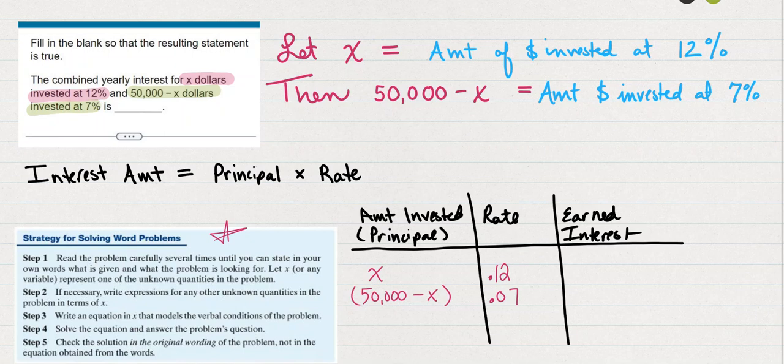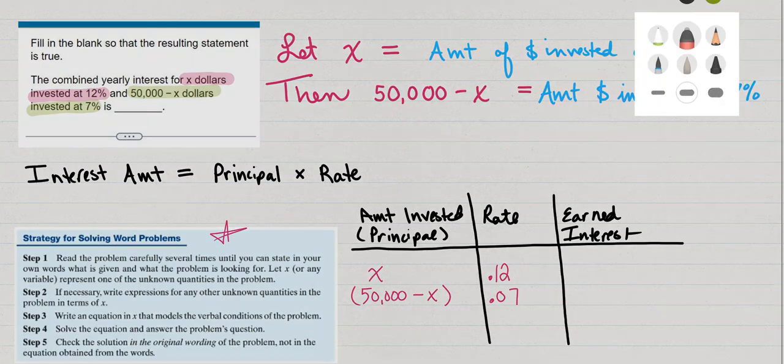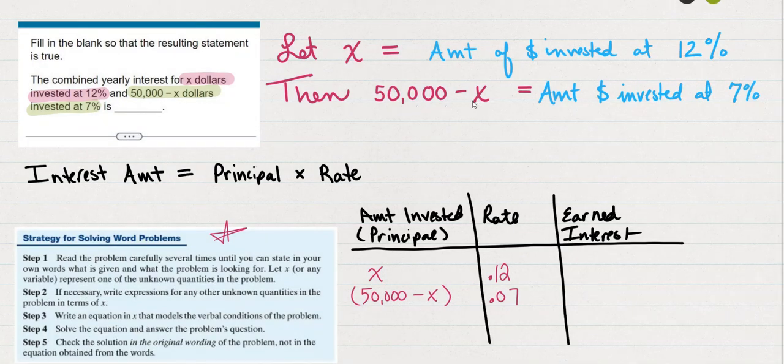they're going to tell us that 50,000 minus X dollars is invested at 7%. So I'm going to say that we'd let X subtracted from the 50,000 be the amount invested at 7%. So they've already set that for us. But in another problem, it might look like this,